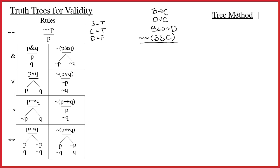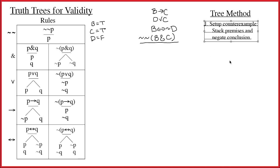We've completed the first step, which was to set up the counterexample — all premises true and the conclusion false. What the tree is going to do is check to see if the counterexample actually makes sense. If the counterexample makes sense, then the counterexample exists and the argument is invalid. If the counterexample doesn't make sense, then it doesn't exist and so the argument is valid.